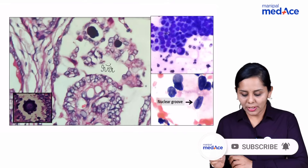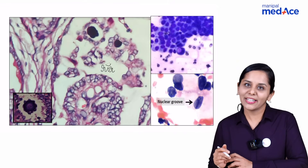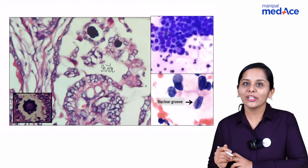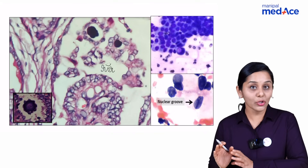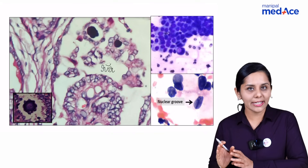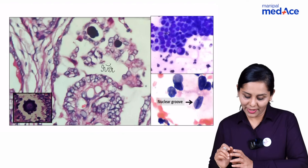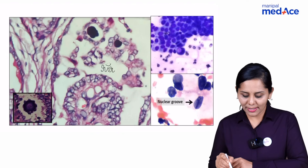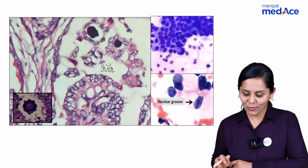Next, what you need to observe are nuclear features like nuclear clearing, internuclear cytoplasmic inclusions, as well as nuclear grooves — which are the key characteristic features of papillary carcinoma of thyroid. Along with that, psammomatous calcification like this will also help you to identify papillary carcinoma of thyroid.